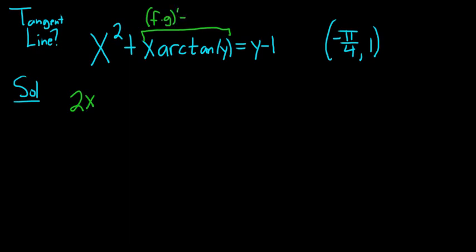The way I do the product rule is as follows: f is the first function, so it's the derivative of the first times g which is the second, plus the first times the derivative of the second. So here the derivative of f which is x is just 1 times the second, arc tan y,